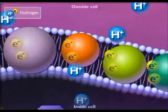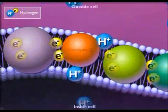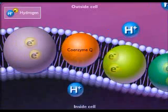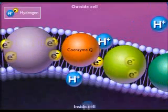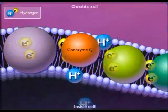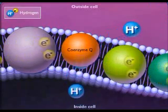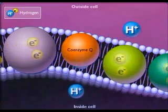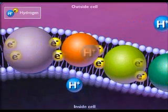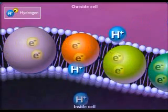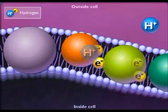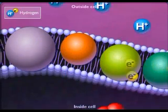Some of the electron carriers, such as coenzyme Q, accept a proton from the inside of the cell membrane as they accept electrons. The proton is then transported through the membrane as electrons move down the chain. This increases the proton gradient across the membrane and enhances the proton motive force.